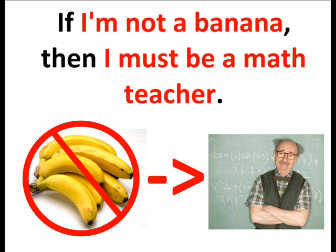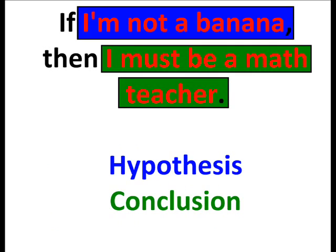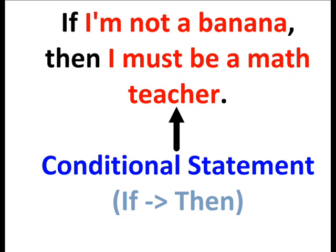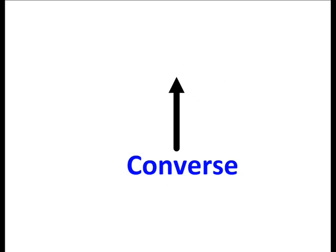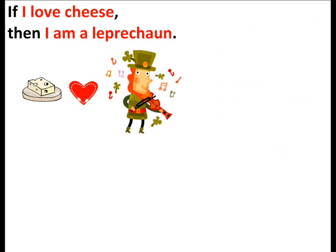So if I'm not a banana, then I must be a math teacher. The first part's my hypothesis and the second's my conclusion. My statement was conditional — my 'if' implied 'then.' If I want the converse, then I will flip both of them.